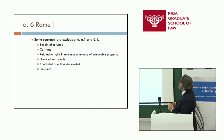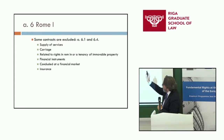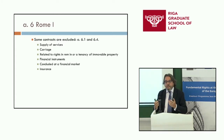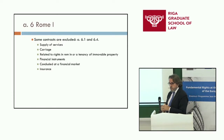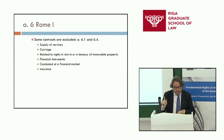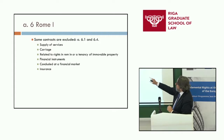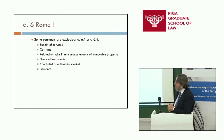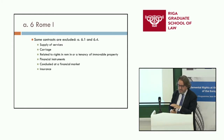Another important limitation is that some contracts are excluded from the scope of Article 6.1. I would focus first on contracts of carriage and insurance contracts, which are very important from a commercial law perspective. Not all supply of services are excluded — you need to read Article 6.4.1, which excludes a contract for the supply of services where the services are to be supplied to the consumer exclusively in a country other than that of the consumer's habitual residence.